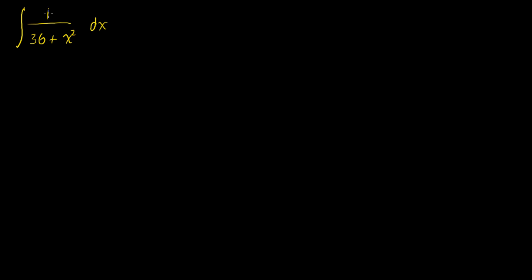This would be easy if I had a 2x sitting up there — the derivative of this is 2x, I could do u substitution and I'd be set. But there is no 2x there, so how do I do it? Well, I resort to our trigonometric identities.